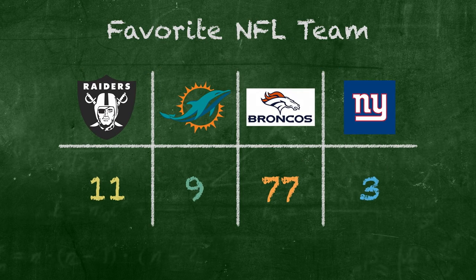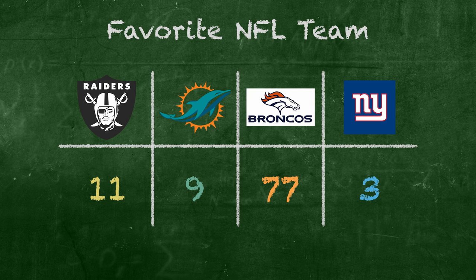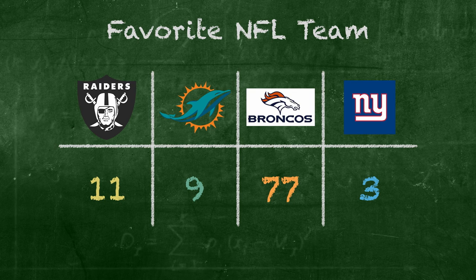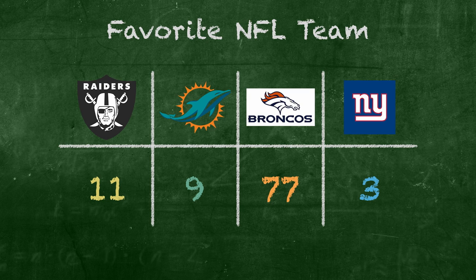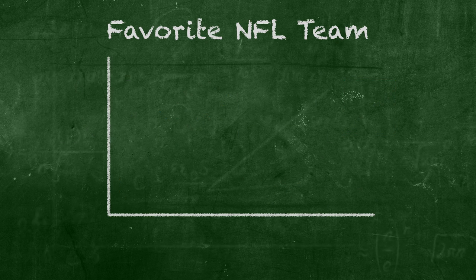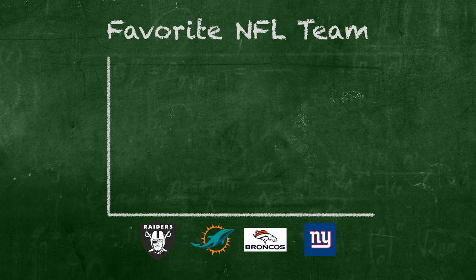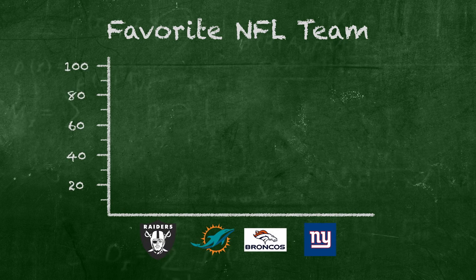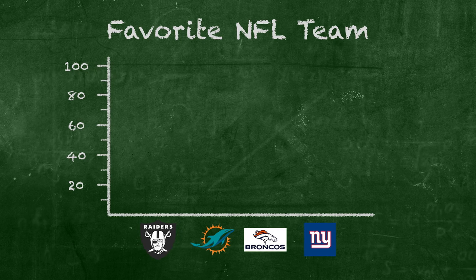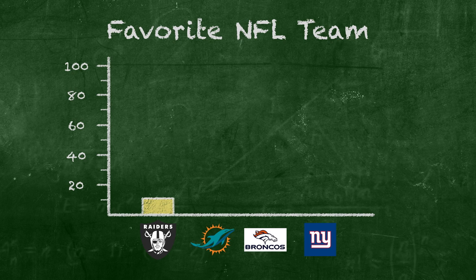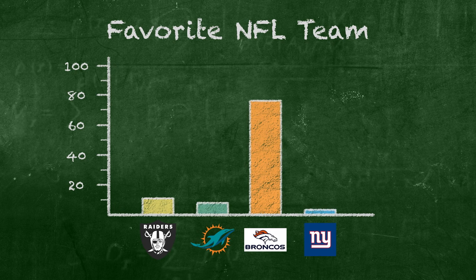We surveyed a group of people about their favorite football team. How should we display this? I'm a plain and simple guy, Robert, so I'd have to go with the bar chart, because it's plain and simple. Bar charts show us all the possible categories, as well as the number of people — also called the frequency — in each category. Here we see the number of people who answered Raiders, Dolphins, Broncos, and Eli's Giants.